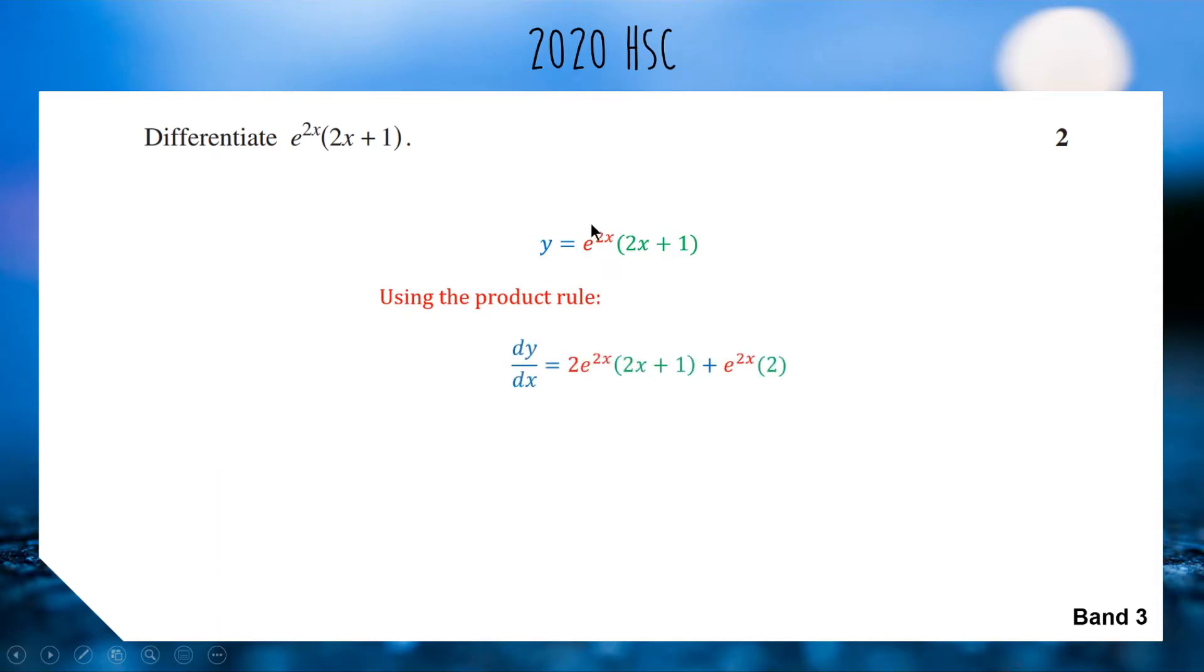We'll consider e to the 2x as the first half and 2x plus 1 as the second half. If we differentiate e to the 2x, we get 2e to the 2x. We leave the green bracket as is. We do plus, leave the red term alone, so e to the 2x stays, and differentiate 2x plus 1 which becomes 2. Expanding gives us 4x e to the 2x plus 2e to the 2x plus 2e to the 2x. Combine these to make 4e to the 2x.